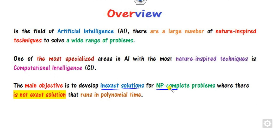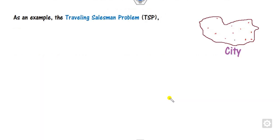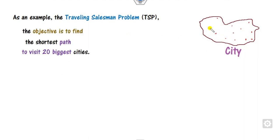What is NP? Non-polynomial — where there are no exact solutions that run in polynomial time. For example, consider a city with 20 places. Your target is to start from one place, travel each city only once, and return to the starting point. That is the traveling salesman problem. You can go from this side or from various other paths.